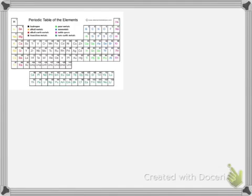Now oxygen is here. It is in the 1, 2 — skip all these — 3, 4, 5, 6th column. So it has 6 valence electrons, meaning there will be 6 dots.